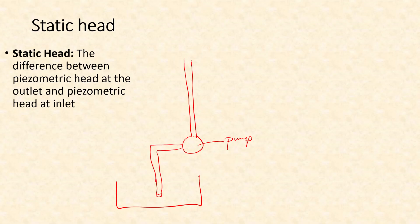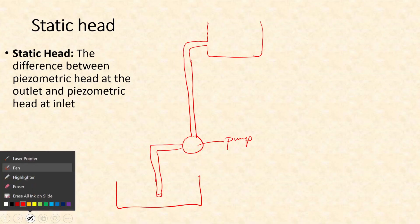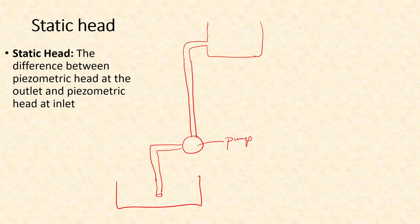For this example, let's assume that this delivery pipe is connected to an overhead tank, which we can also call the delivery tank. Now if we have different levels of water in these two tanks — suppose in the supply tank water level is this much and in the delivery tank also there's some amount of water.